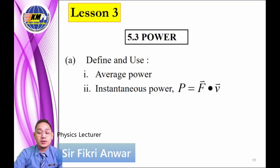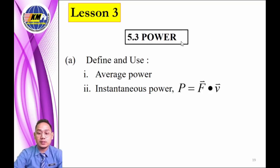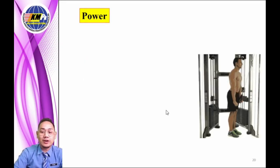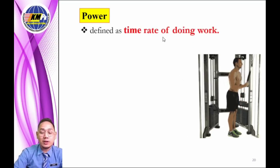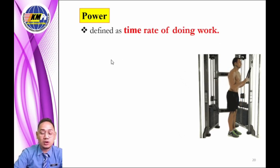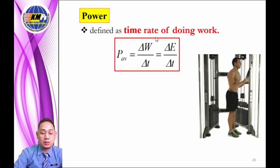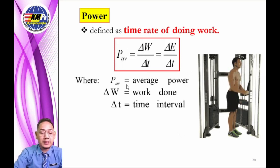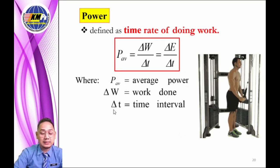We are now entering the final subtopic: power. For this subtopic, we will learn the difference between average power and instantaneous power. Power is defined as the time rate of doing work. The term 'rate' means something is being changed over time — in this case, the work done or energy is changed over time, giving a value of power. Where P is the average power, ΔW is the work done, and ΔT is the time interval.